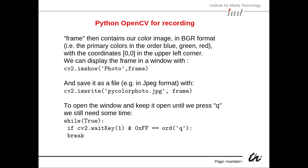We can display this frame in a window on our computer using the imshow function: cv2.imshow(), where the first argument is the title of the window and the second is the frame we just captured. We can also save it as a JPEG file using imwrite(), where the first argument is the filename and the second argument is the frame or image we want to store.